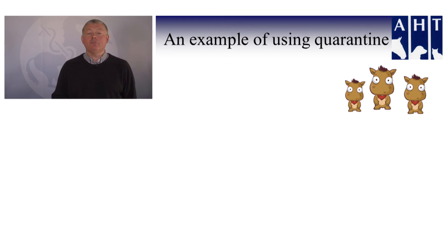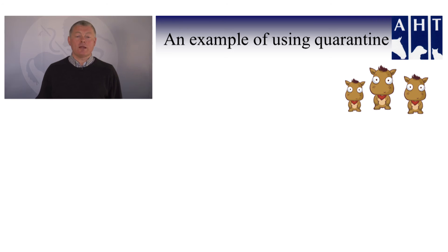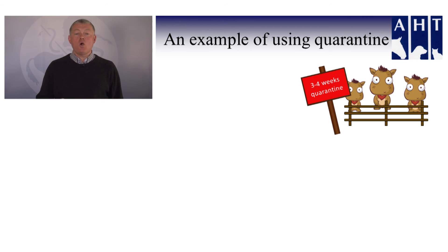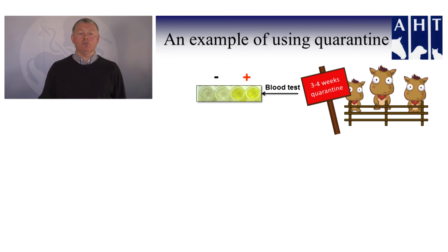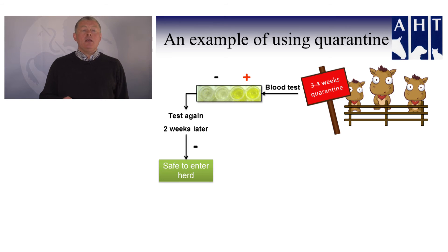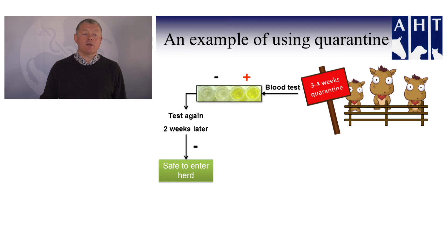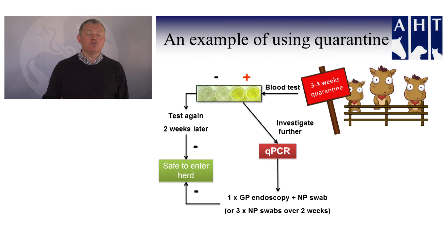I want to give an example of quarantine and how it can help prevent the introduction of disease, using strangles as the example. We have groups of horses waiting to come onto a premises — we place them into a quarantine area on the farm for three to four weeks while we observe them clinically and conduct tests. When they first arrive, we conduct a blood test looking to see if they've been exposed to Streptococcus equi. If those animals test negative on the first sample and remain negative two weeks later, we consider them safe to enter the herd — highly unlikely to be harbouring the organism.